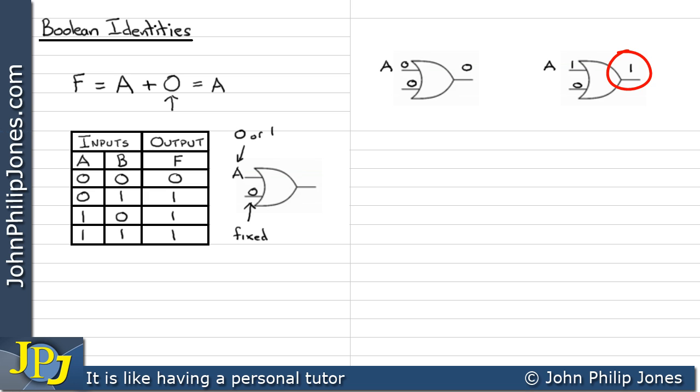Of course, two 1's would also give us a 1 at the output. Here we can see that we have this expression F is A OR 0. If we look very carefully, we can see for this gate that when A was 0, the output was 0. And for this gate, when A was 1, the output was 1. So in other words, the output is whatever A is. Consequently, F equals A or 0 will always be A.